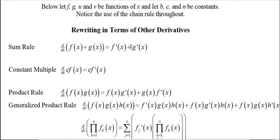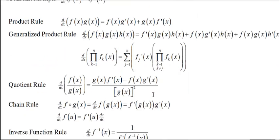So we have the sum rule. Derivative of the sum is the sum of the derivatives. Constant multiple rule. Constant can be brought out front. Derivative of a constant times a function is constant times the derivative of the function. The product rule. Derivative of a product is first times the derivative of the second plus second times the derivative of the first.